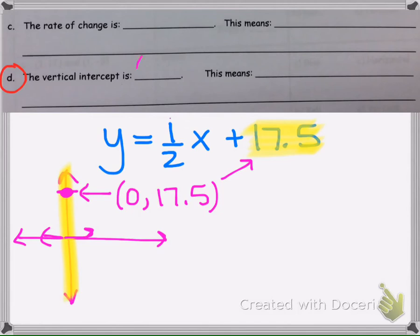So the vertical intercept is 0, 17.5, and now we have to explain what that means.